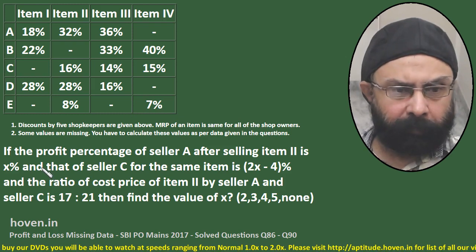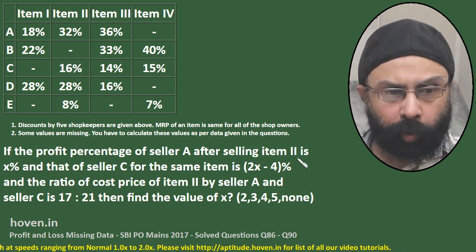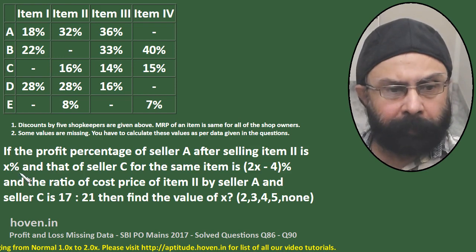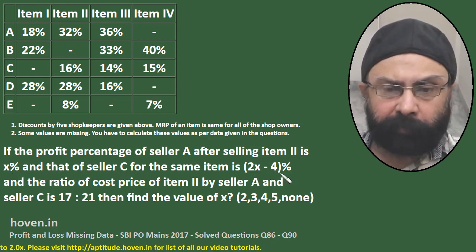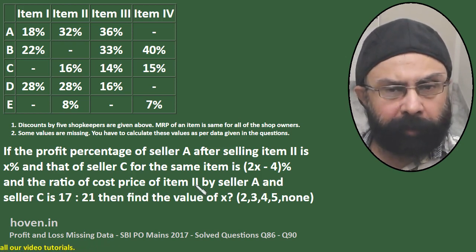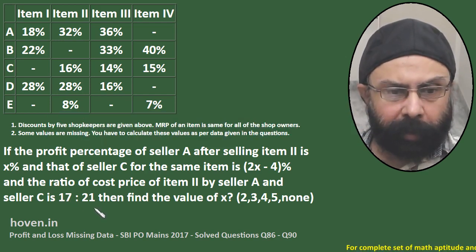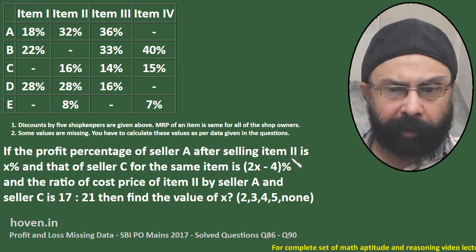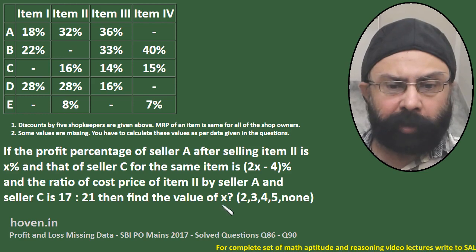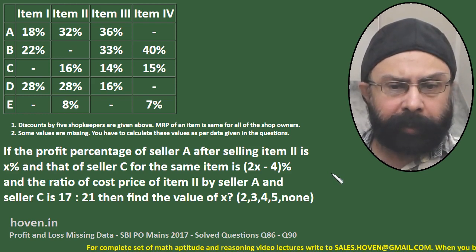Let us take the first question. If the profit percentage of seller A after selling item 2 is x percent, and that of seller C for the same item is 2x minus 4 percent, and the ratio of cost price of item 2 by seller A to seller C is 17 is to 21, we have to find out the value of x.